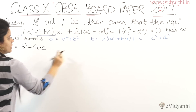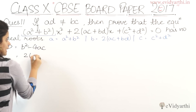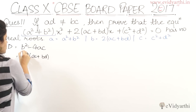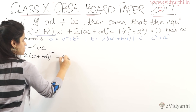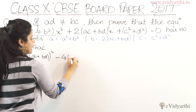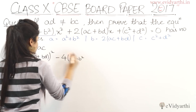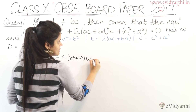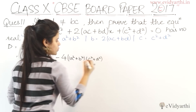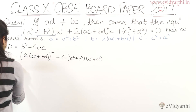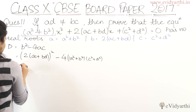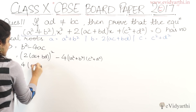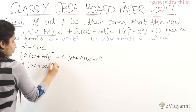Now let's put the values into the discriminant formula B² − 4AC. B is 2ac + bd, so we take the whole square of that, minus 4 times A which is (a² + b²), multiplied by C which is (c² + d²). Now we solve this: 2 squared gives 4, so we get 4(ac + bd)².